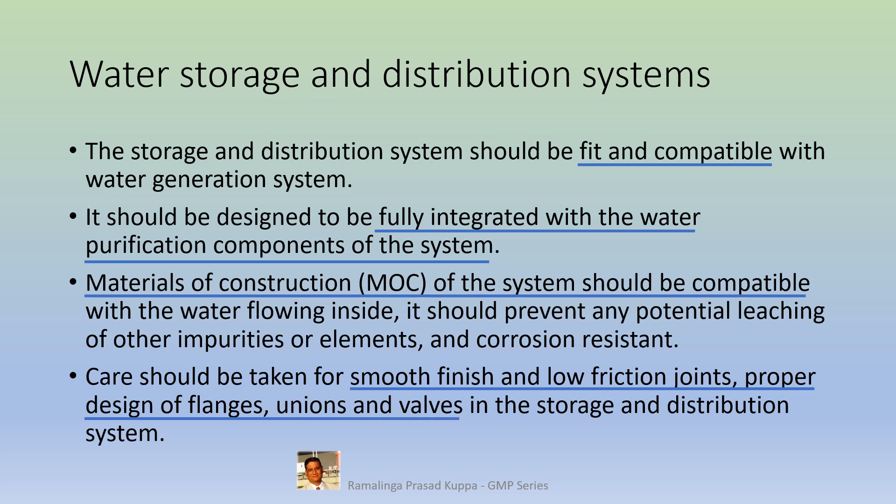unions and valves in the storage and distribution system. The internal finish should have an average surface roughness of not greater than 0.8 micrometer Ra. When stainless steel is used, mechanical and electro-polishing techniques may be employed. Electro-polishing improves the resistance of stainless steel materials to surface corrosion.